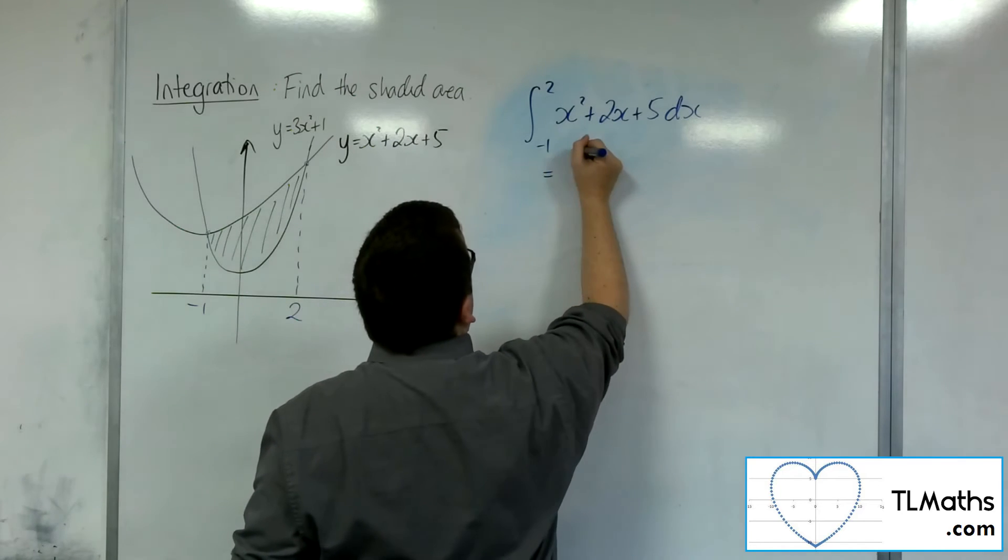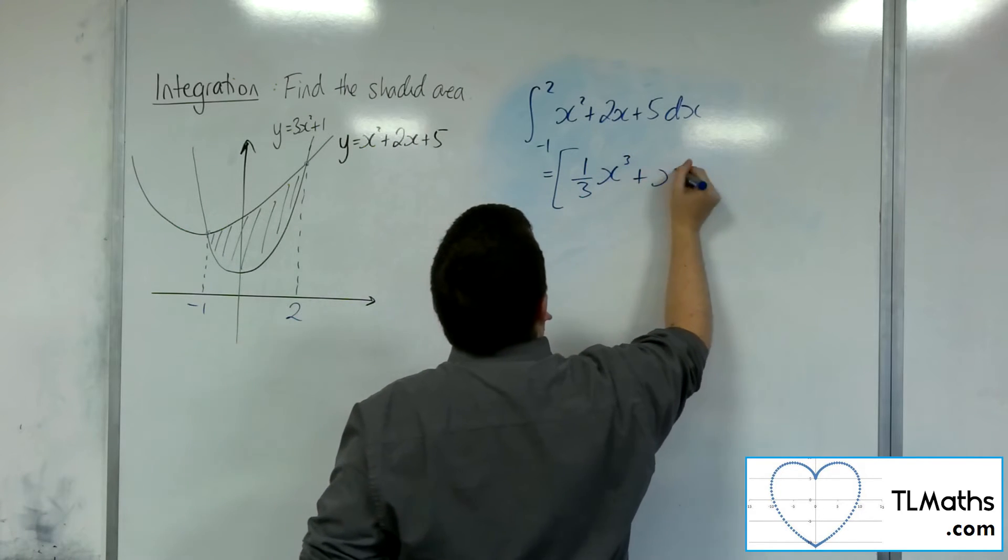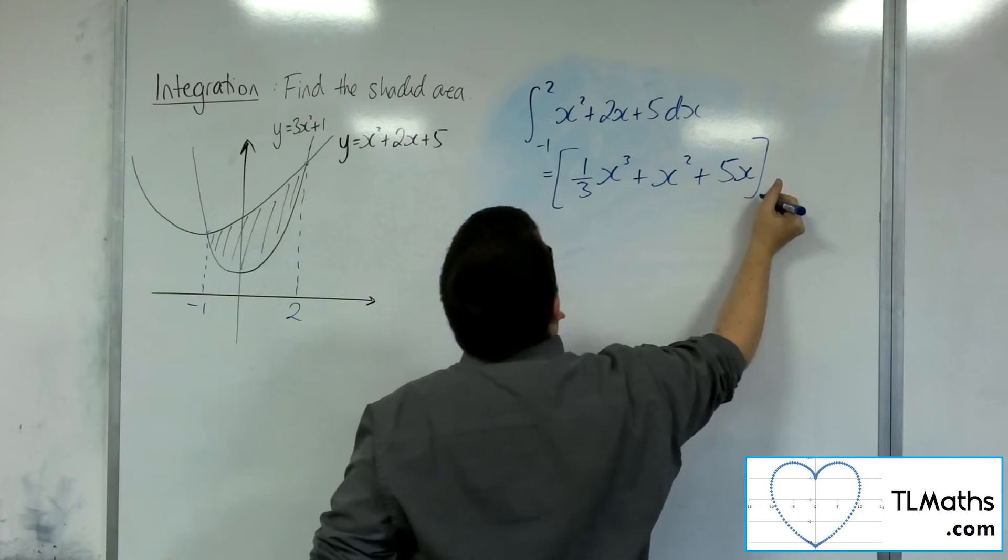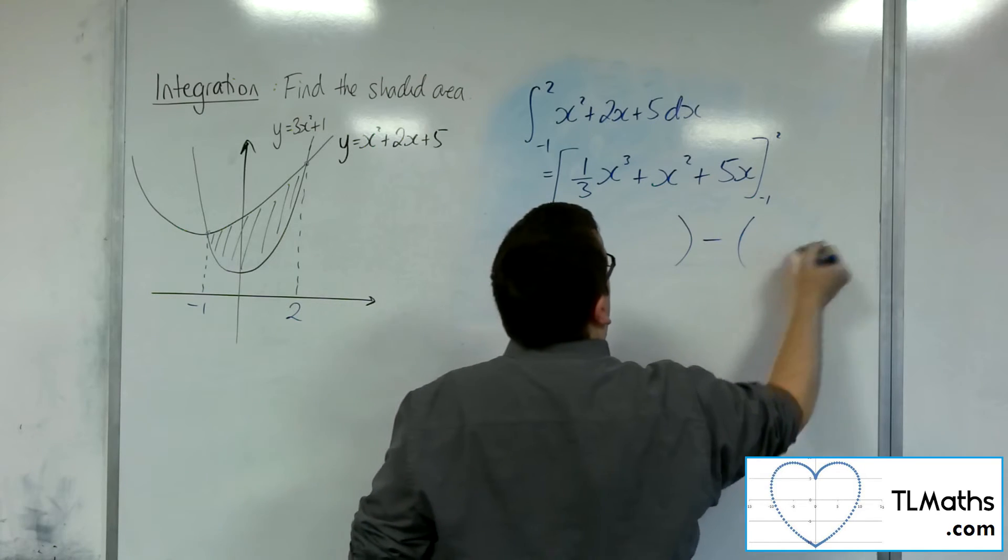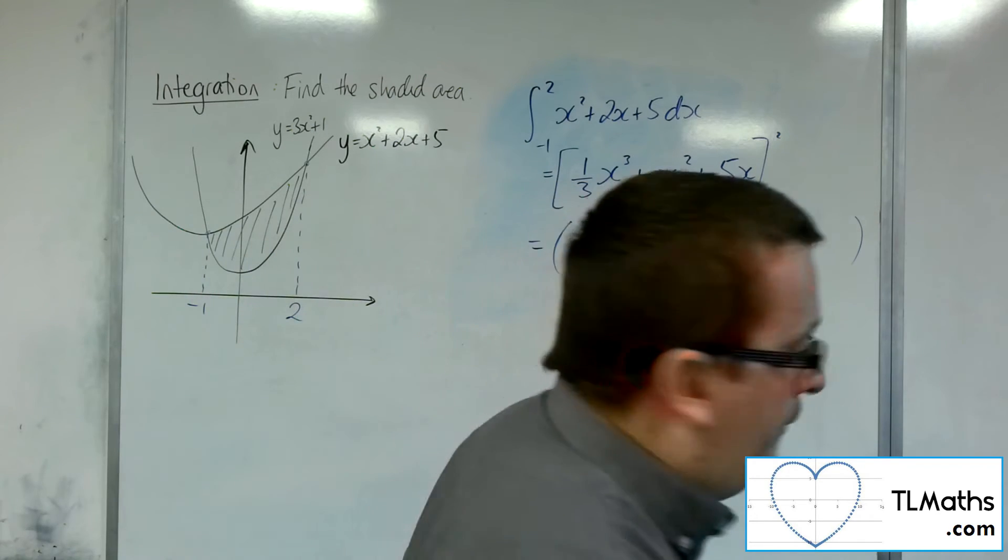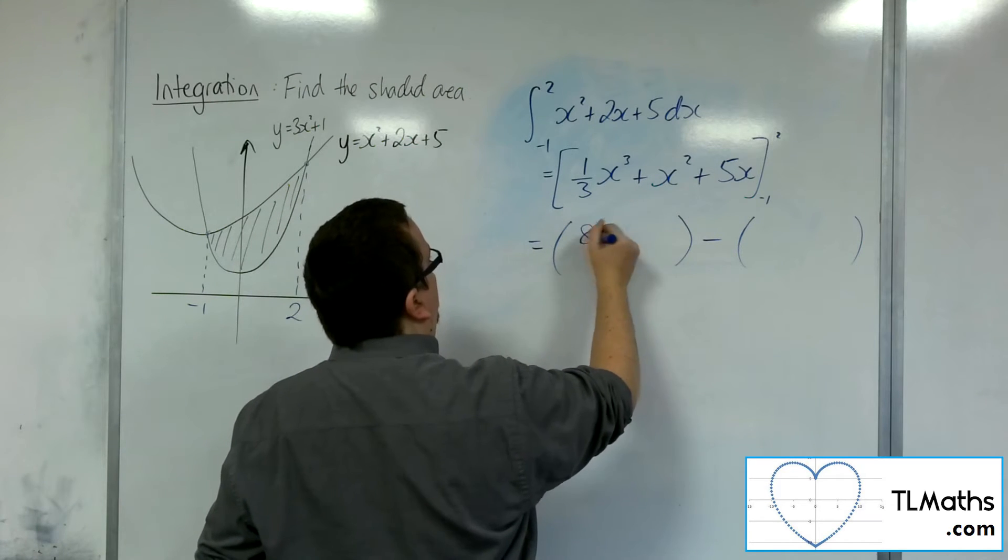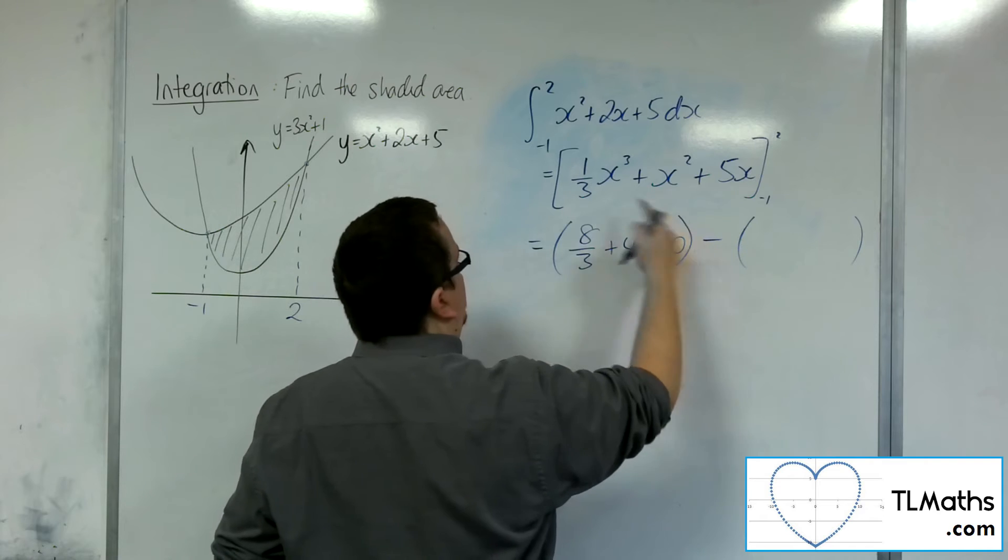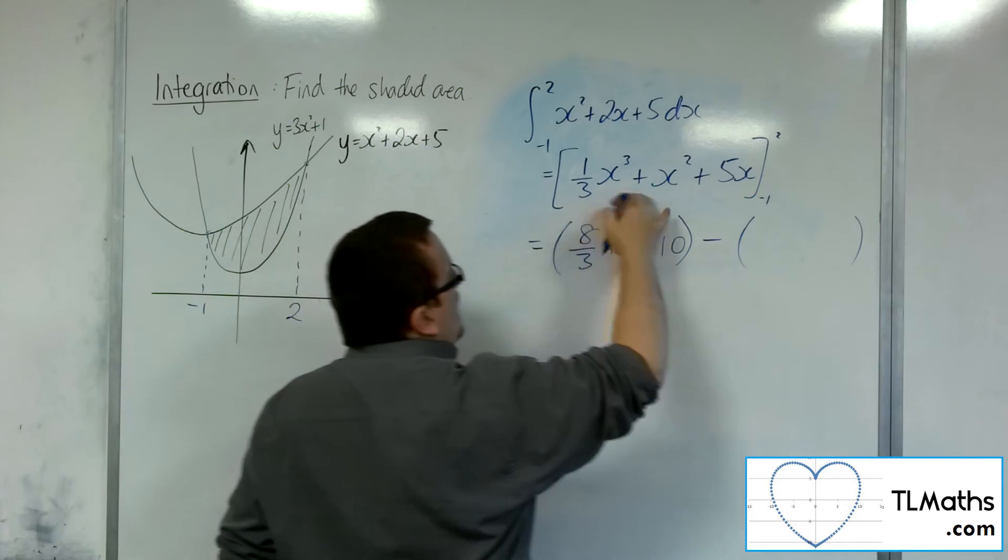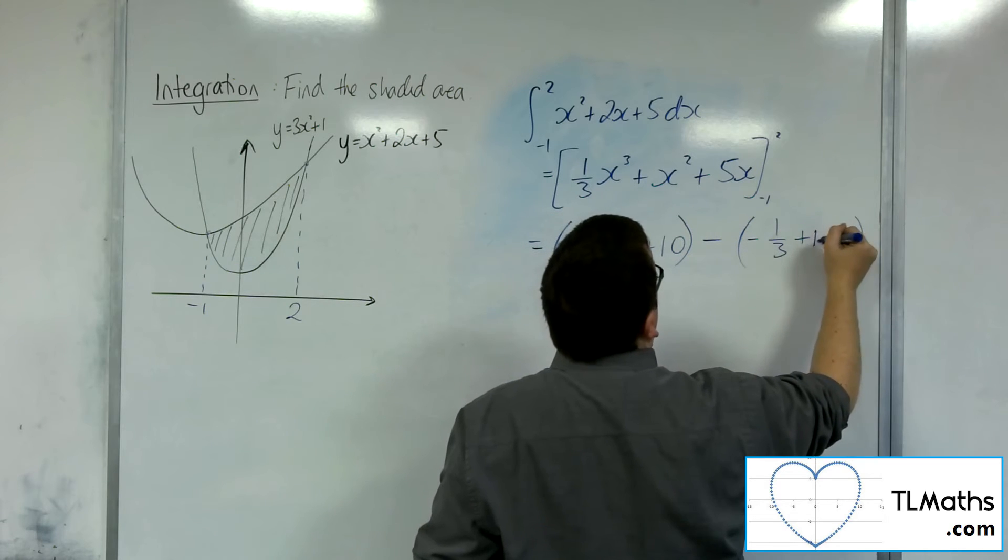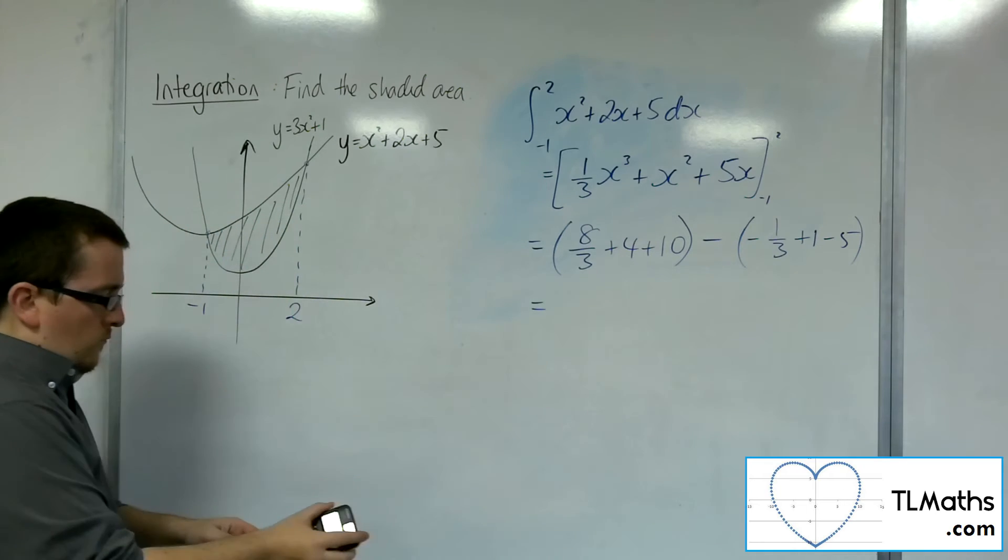So integrating that, add 1 to the power, divide by the new power, value in between minus 1 and 2. So let's substitute in. So we're going to get 2 cubed over 3, so 8 thirds plus 4 plus 10, substituting the 2. Substituting the minus 1, we're going to get minus 1 third plus 1 minus 5.